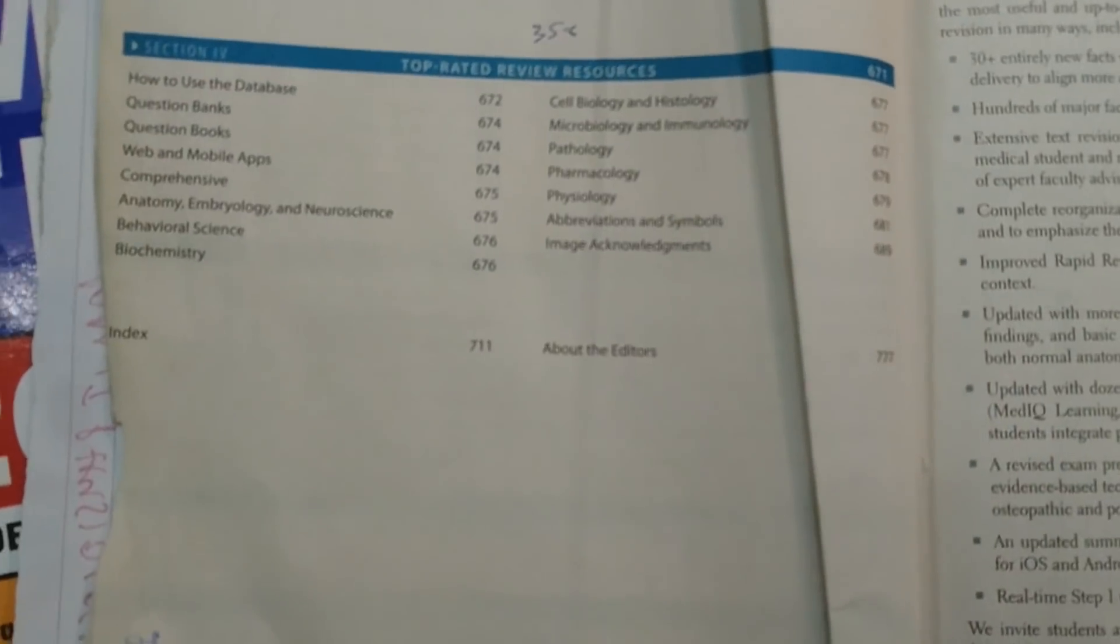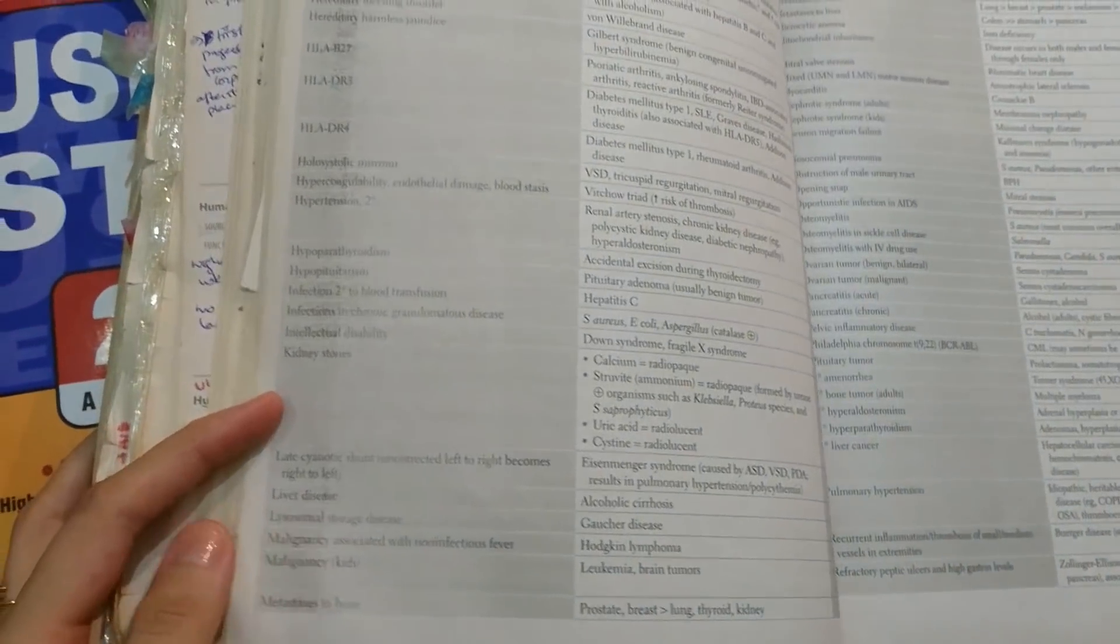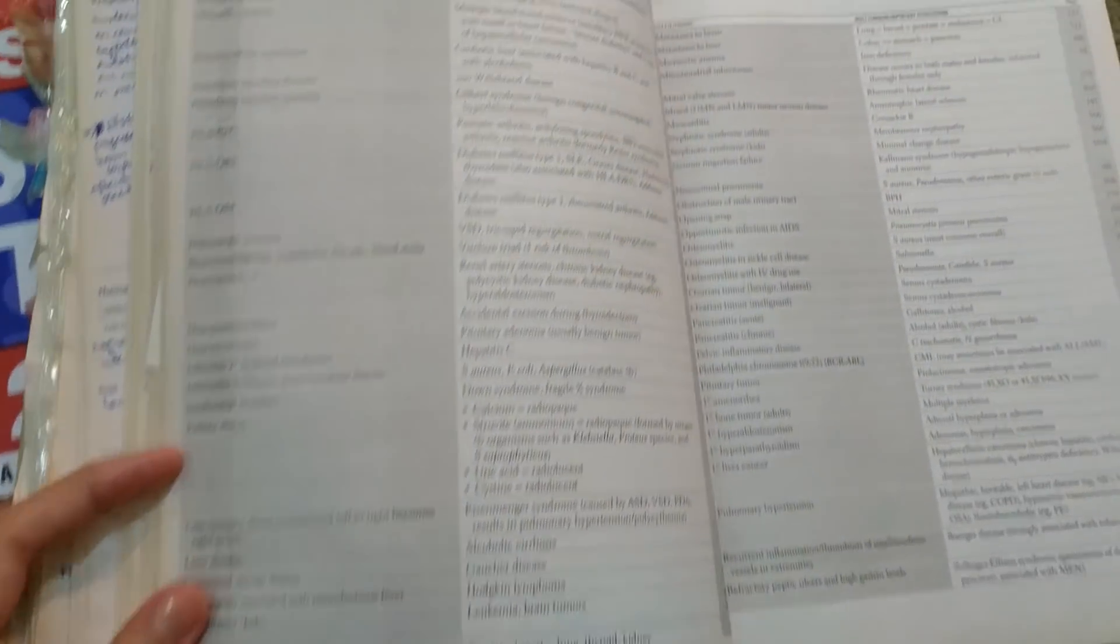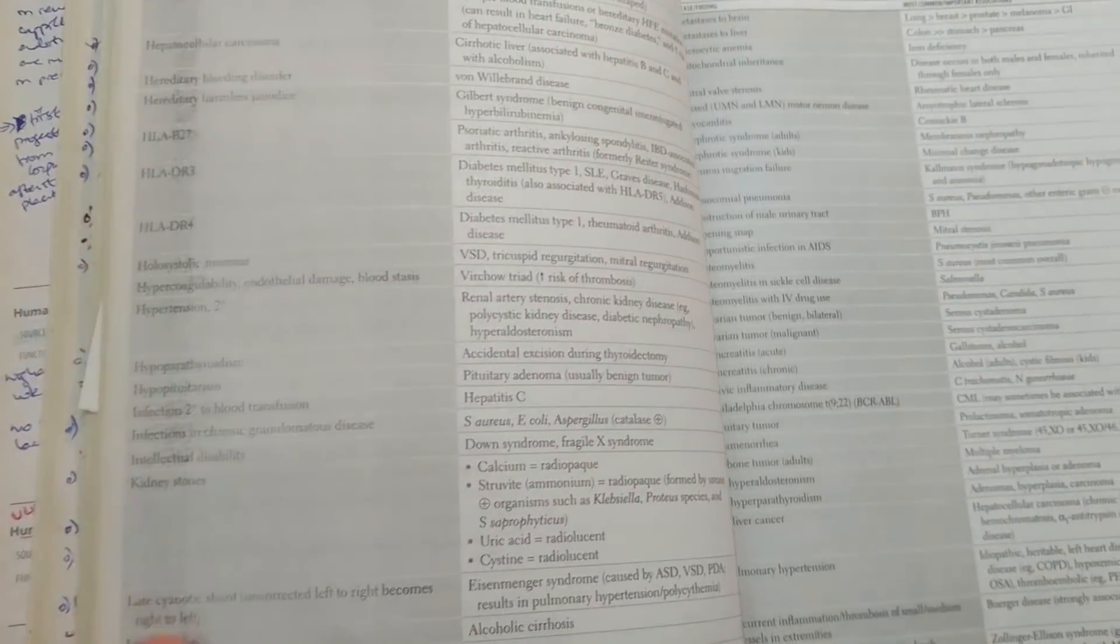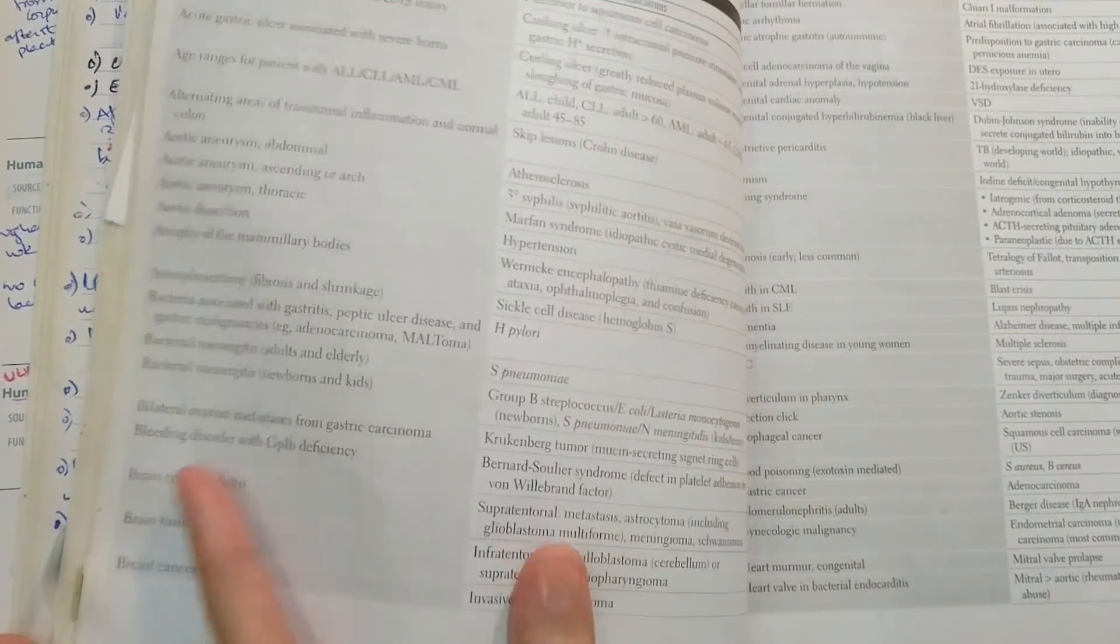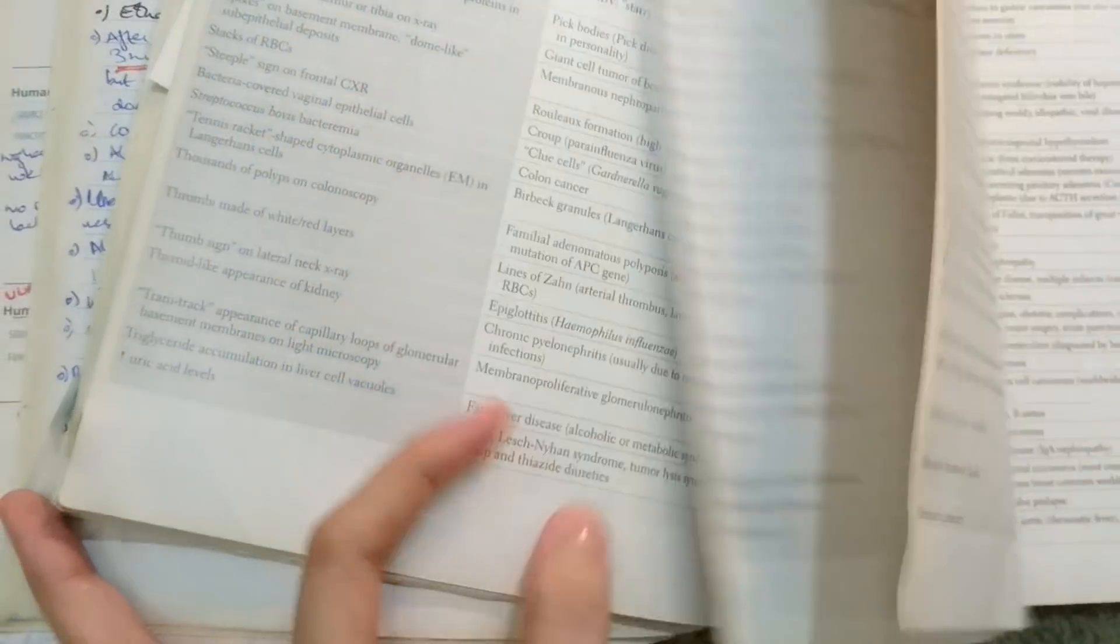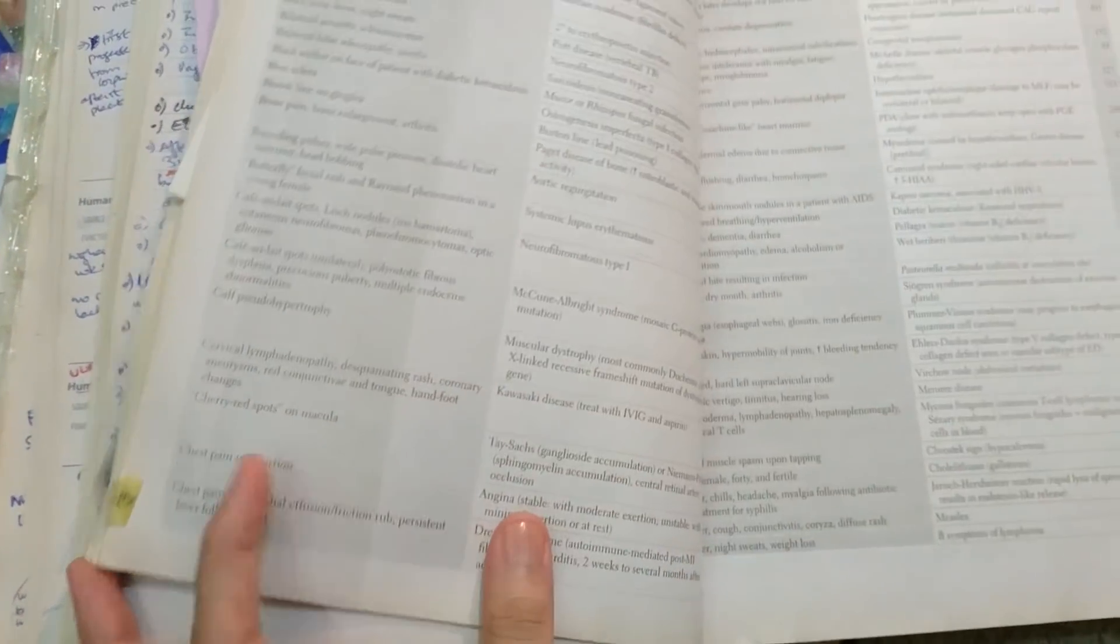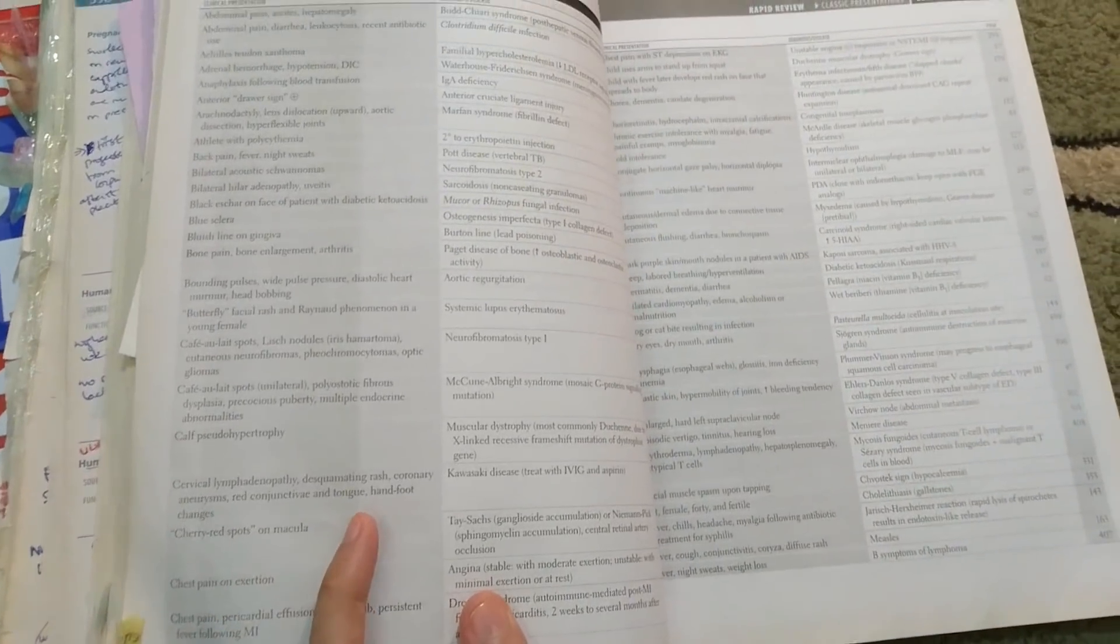So one good thing at the end of this book is that they have this little review section that I didn't use but I think that it's really good and it could be really useful if you just want a quick recap of all the important conditions. They've mentioned all these key points and all the diagnosis that you can get from those. So if you just go through this it will be a good way to recap everything that you've read in the book.